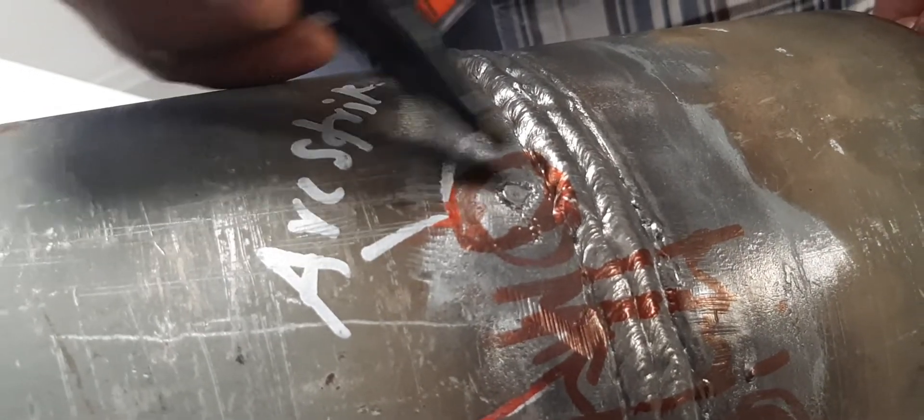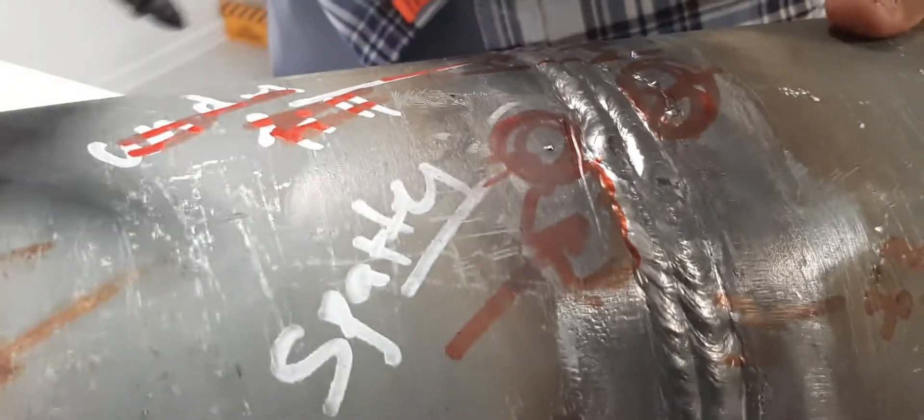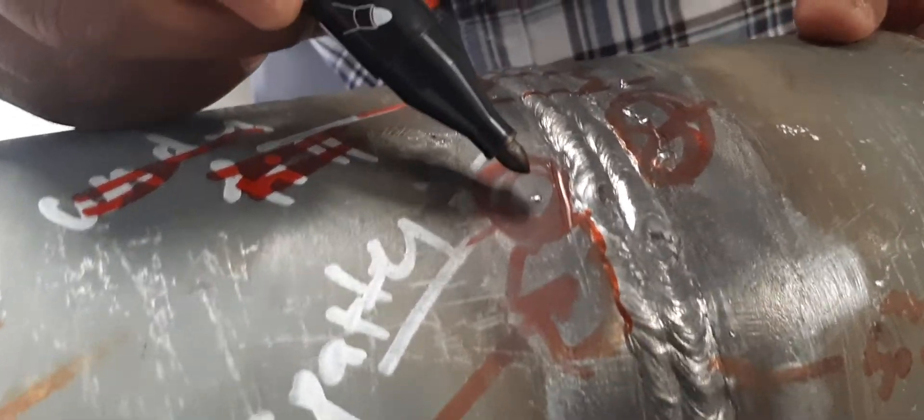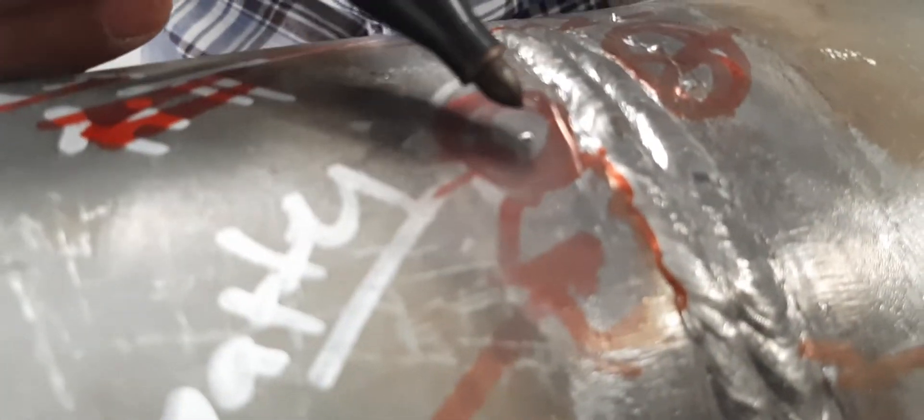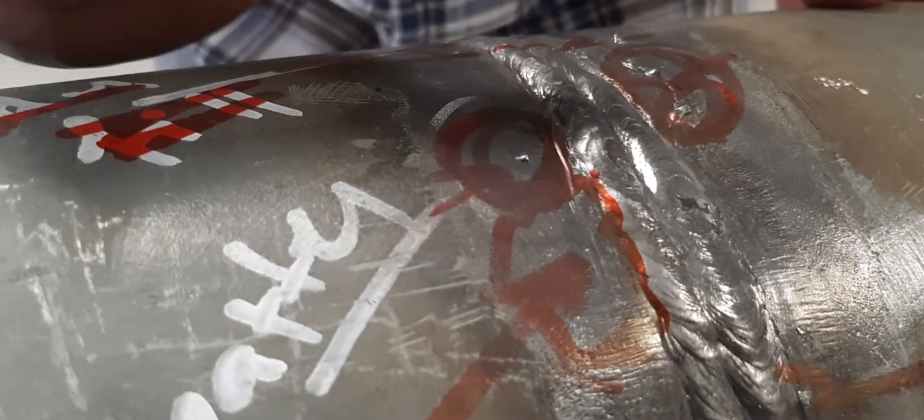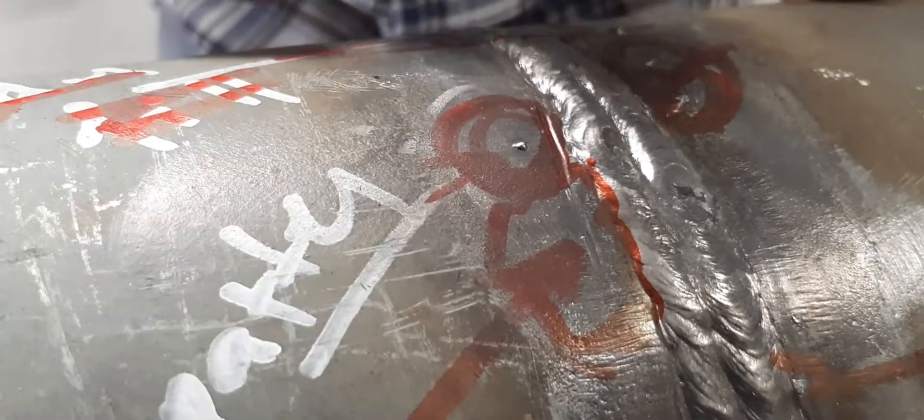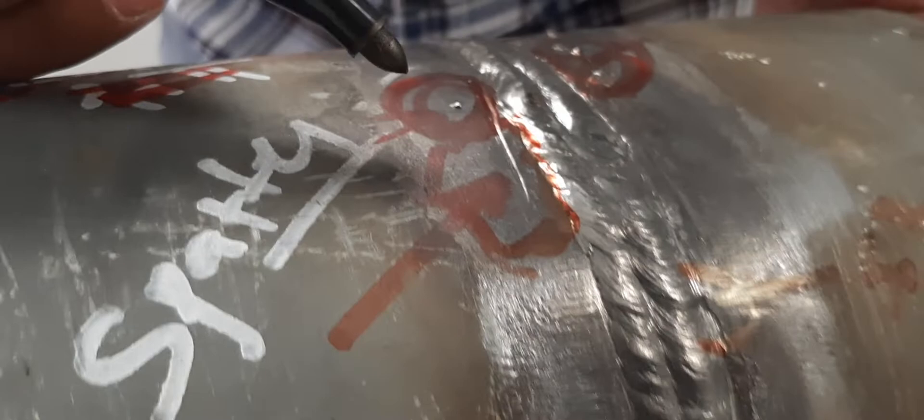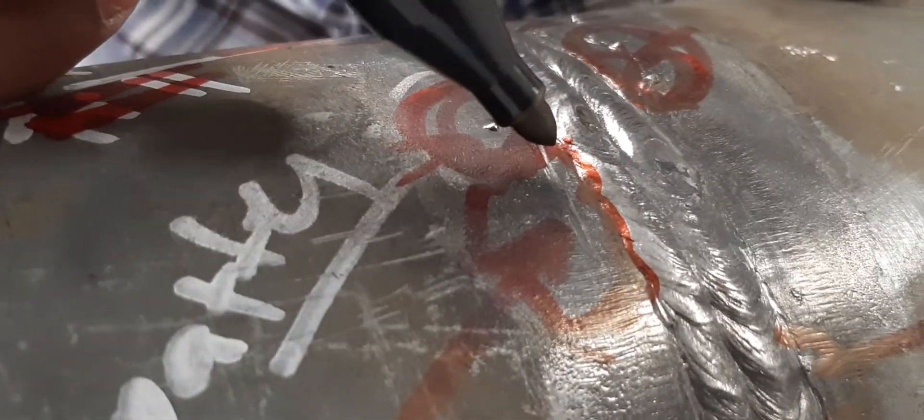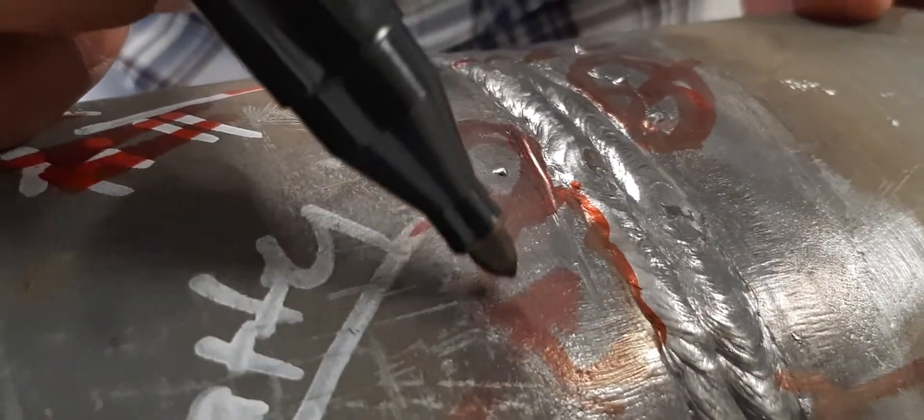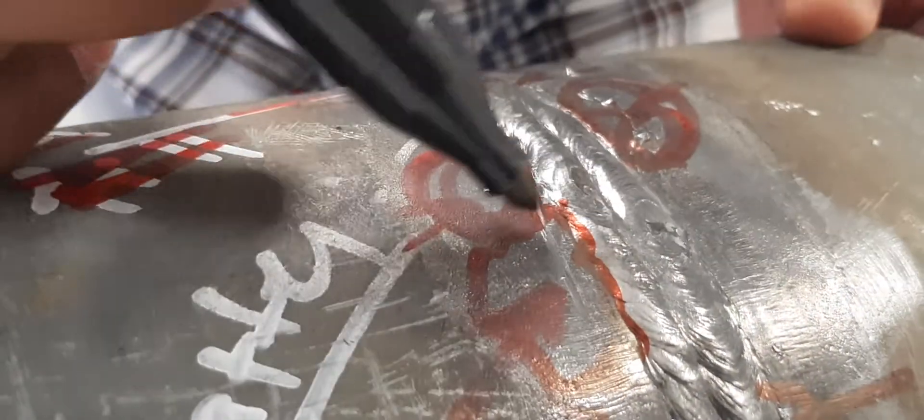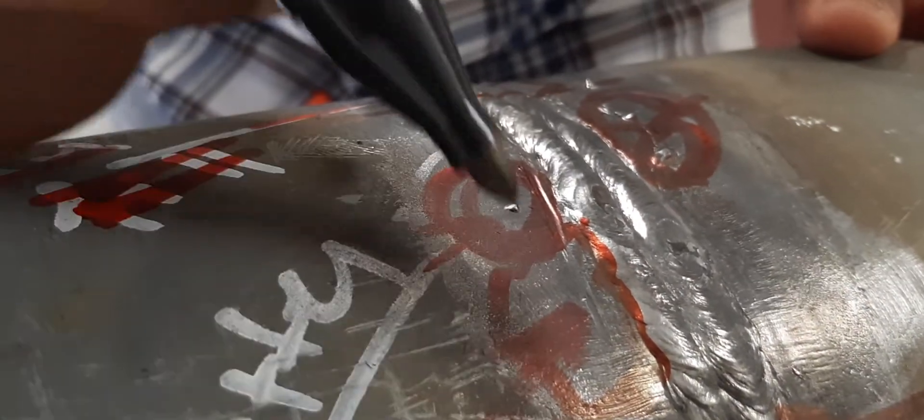This is spatter. Spatter is nothing but solidified weld metal - we can grind and remove it. And you see here one line mark, this is material damage or mechanical damage.